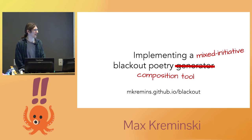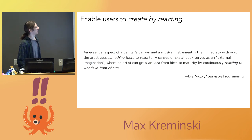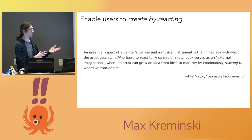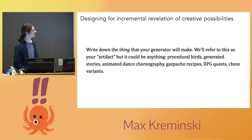What I'm actually implementing now is a mixed-initiative blackout poetry composition tool. That will be at the same URL eventually when I get it working — I wanted to do it for this talk, but it's not happening. What I really want to do is enable users to create by reacting. The creative process is made of decisions — some are consequential, some are totally inconsequential, and it's really easy to get hung up on the inconsequential ones. What I want to do here specifically is narrow down the decision space to only decisions that we know are interesting, so we can present the user with a set of options to pick between, and each of those options is a good option.